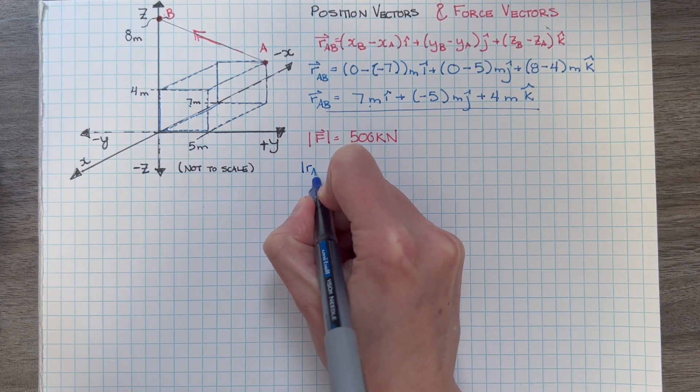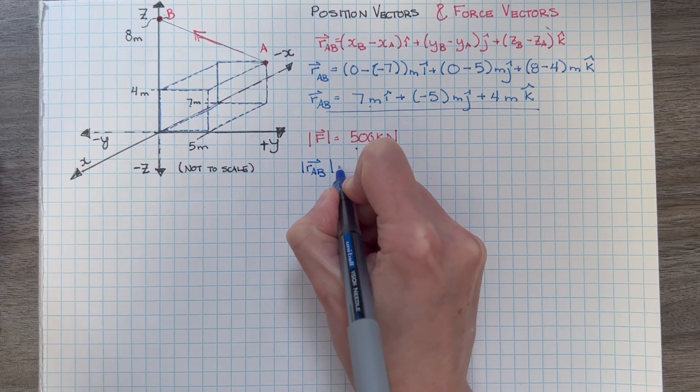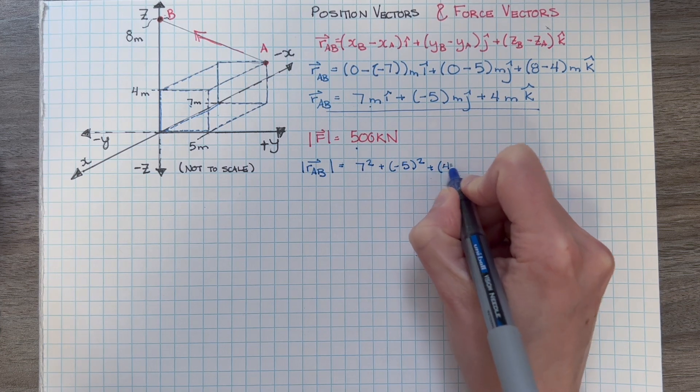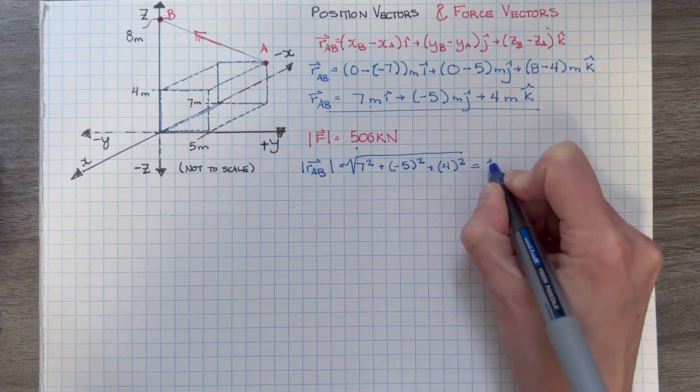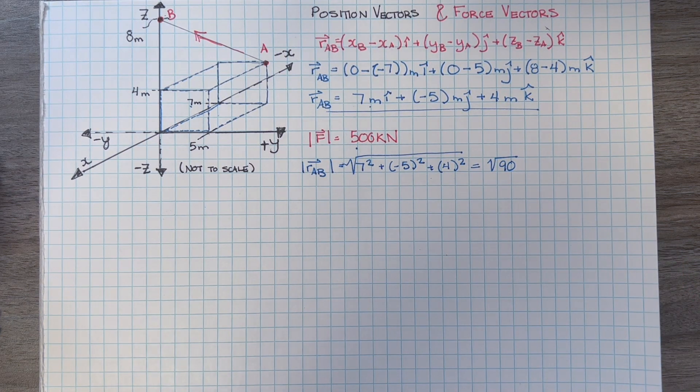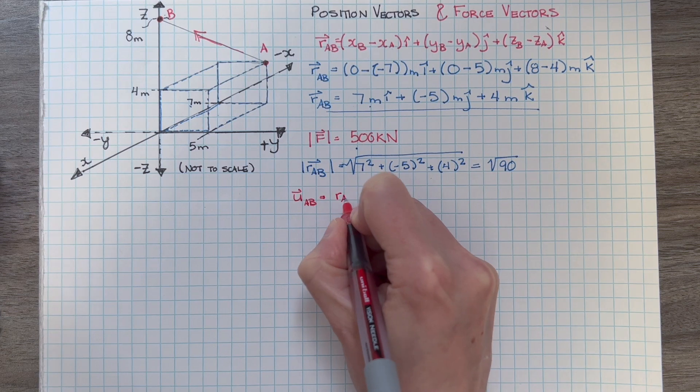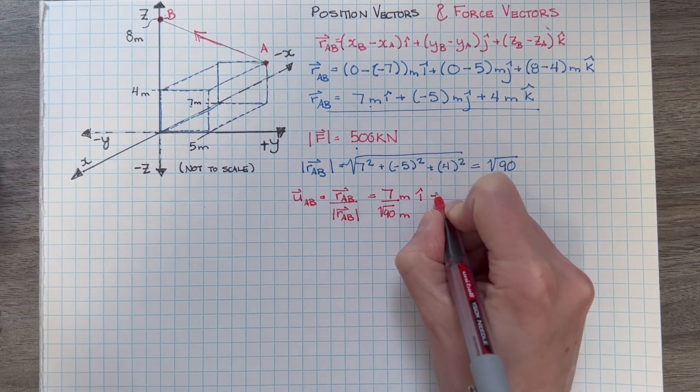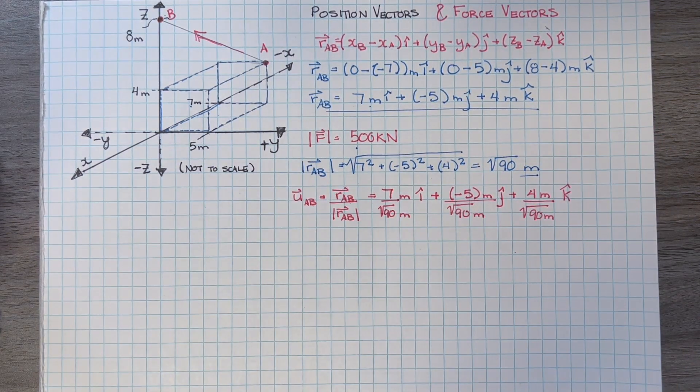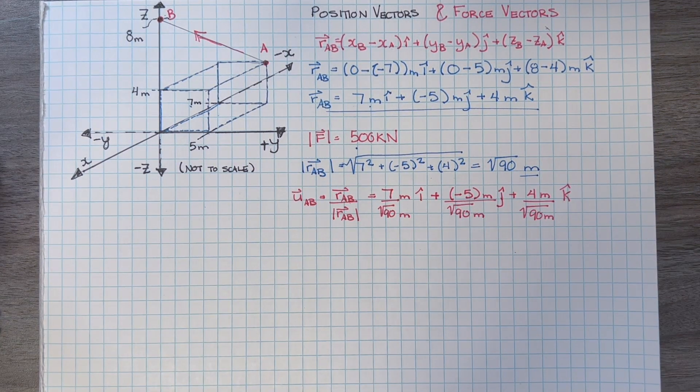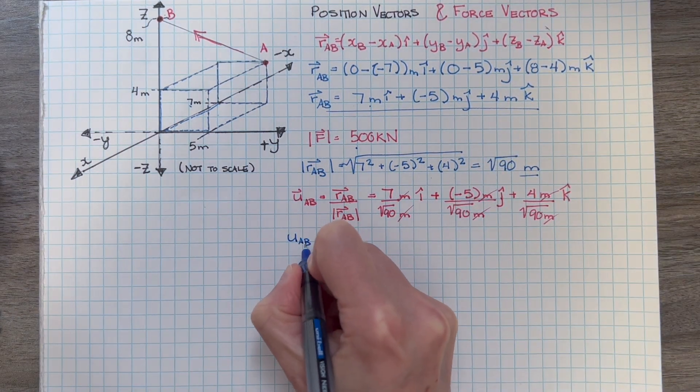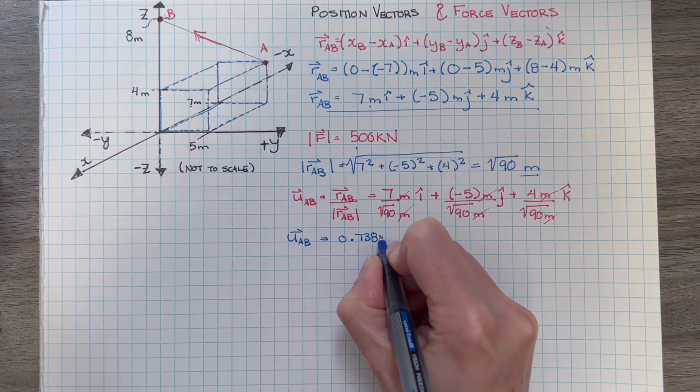Let's find our unit vector. To do that, we divide each of our position vector components by the magnitude of our position vector. We get the square root of 90. That means our unit vector is... And all of our units will cancel. So, to the nearest three decimals, here is our unit vector.